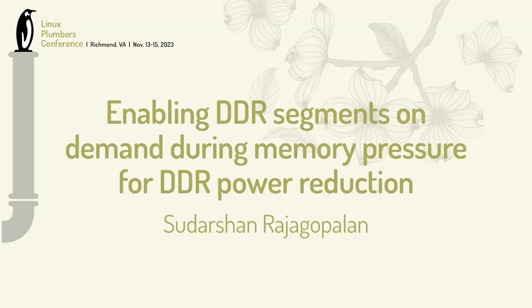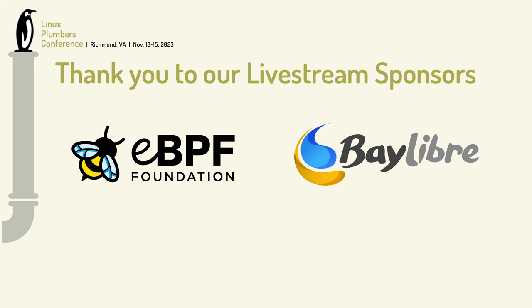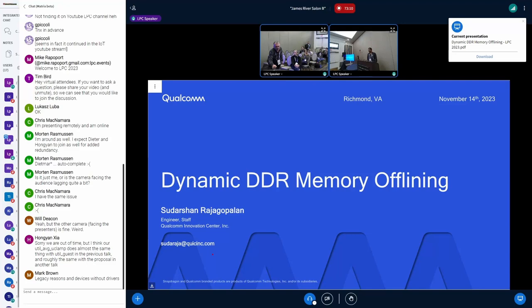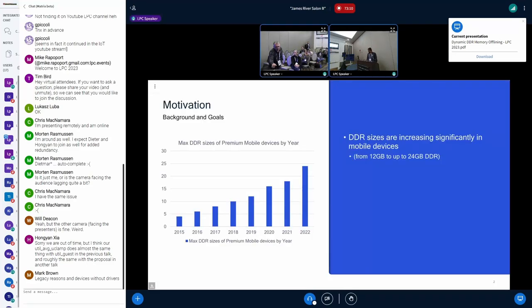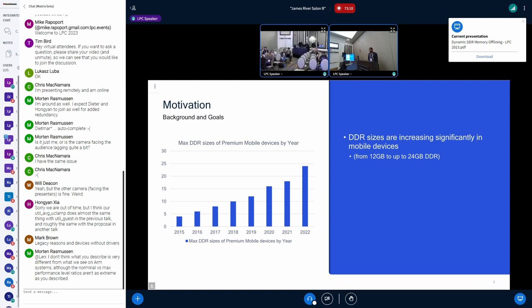Hello everyone, my name is Sudarshan. I work at Qualcomm in the Linux kernel development team. The topic of my presentation is a dynamic way of offlining DDR segments for power reduction. The general motivation is that with increasing DDR sizes in mobile systems these days, more segments mean more power consumption, and if only a limited portion of DDR is being used, it makes sense to collapse or offline the unused segments to save power.